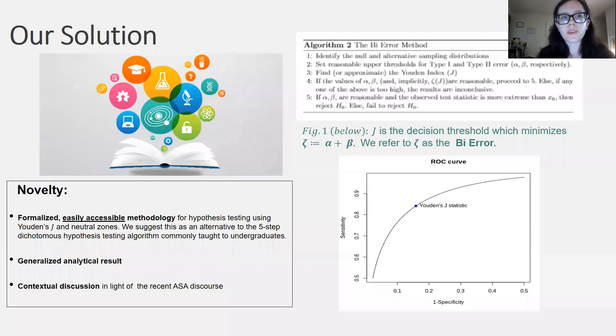In order to eradicate this problem at the root, we need to stop teaching the five-step procedure with the conventional bright line at p = 0.05. But it's not enough to just say what not to do. We need an alternative to replace it with. Not only that, but we need a replacement method which is simple and accessible enough to teach to undergraduates. That's where my work comes in.